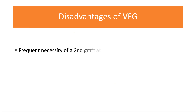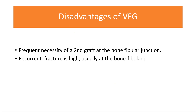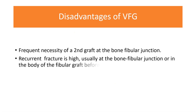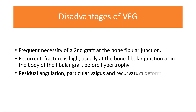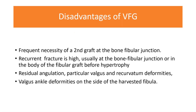Disadvantages of vascularized fibular graft include frequent necessity of a second graft at the bone-fibular junction. Recurrence of fracture is usually high because at the bone-fibular junction or in the body of the fibular graft before hypertrophy, fracture may ensue. There may be residual angulation, particularly valgus and recurvatum deformity, and valgus ankle deformity may occur on the donor side where the fibula was harvested.